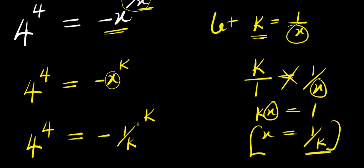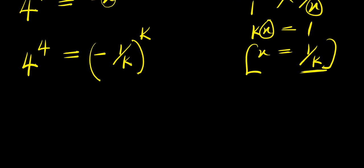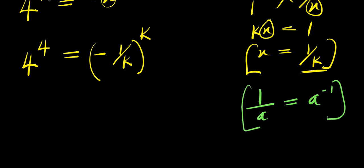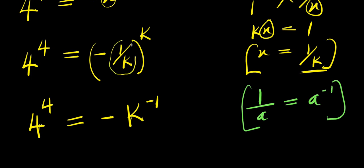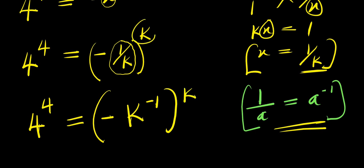We can decide to put this in brackets so that we can distinguish between this and that. I need to consider this identity: if you have 1 divided by a, this is just like writing a power negative 1. So 1 divided by k is the same thing as writing k power negative 1. So we have 4 power 4 equals negative k power negative 1, because of this 1 over k — and this is raised to the power of k, the k that we have outside here.